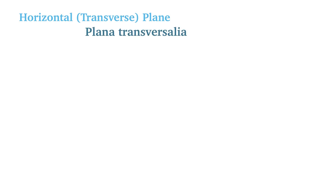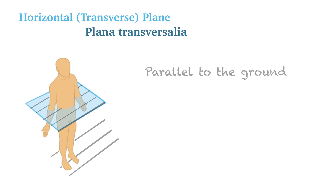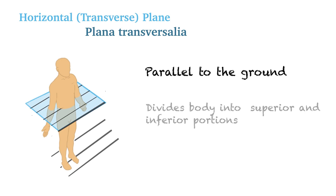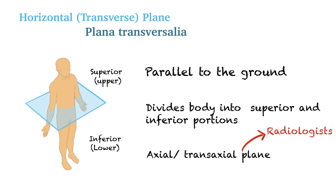The transverse or horizontal plane is also known as plana transversalia in Latin. Transversalia means horizontally or transversally — it is a plane passing through the body running parallel to the ground. The transverse plane divides the body into superior (upper) and inferior (lower) portions. Radiologists often refer to this plane as the axial plane or transaxial plane.